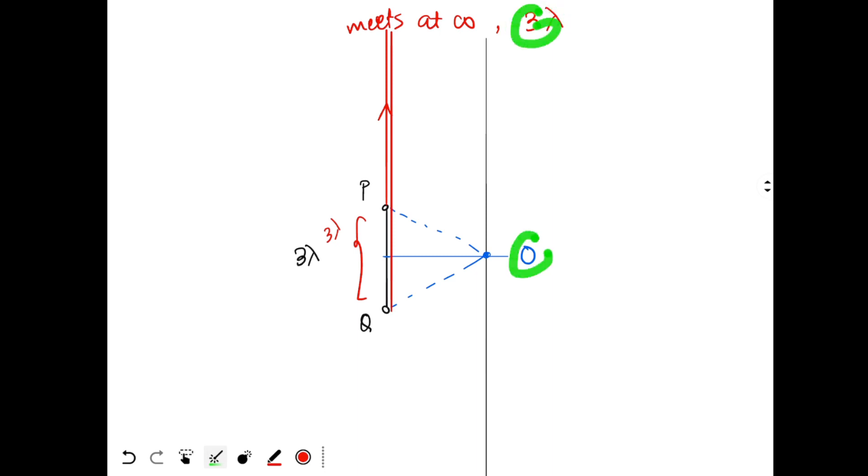So while going from 0 to 3 lambda, I will get some points in between where the path difference will be lambda, and then path difference will be 2 lambda. Zero path difference, lambda path difference, 2 lambda path difference, at infinity 3 lambda path difference. This is the maximum path difference possible, maximum possible.